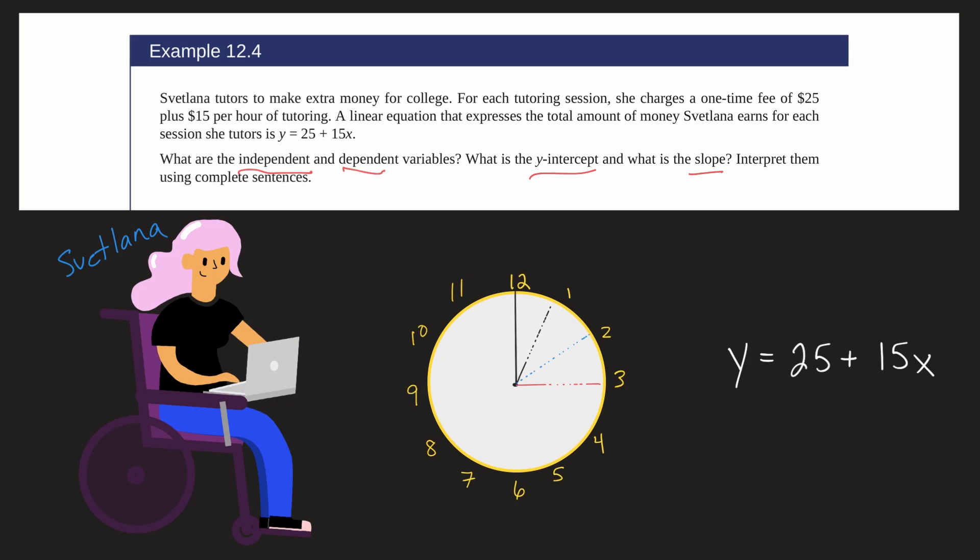So what is our dependent variable? Well, that's the y here. So the dependent variable represents the money she earns. What is the independent variable that could change from student to student? Well, that is the amount of time she puts in. So time.